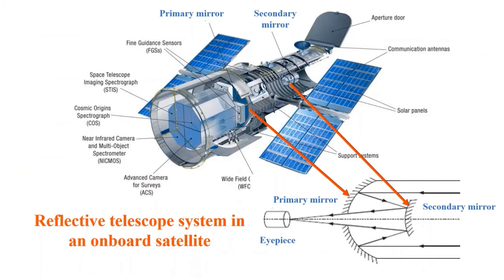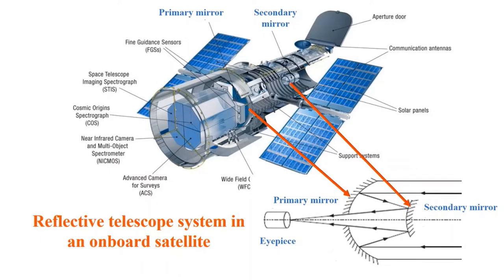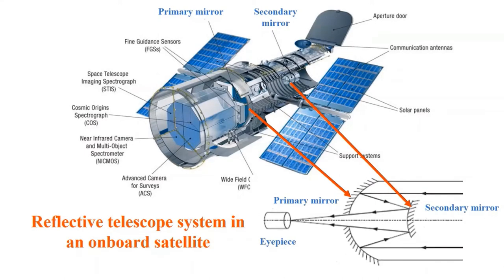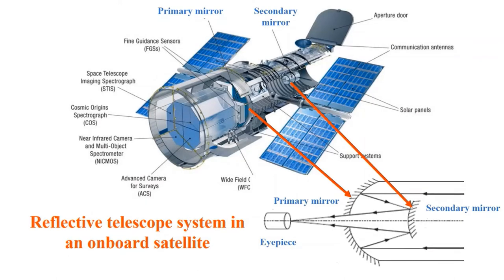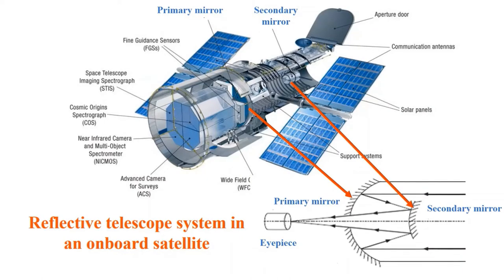Satellite images are captured by imaging devices with the help of on-board telescopes in combination with other electronic devices. In a reflective telescope system, the primary mirror is the heart of the system, which collects the optical signal and focuses the light on a secondary mirror. The signal reflected by the secondary mirror is then converted to an electronic signal and sent to the ground station.